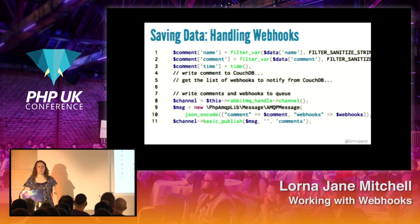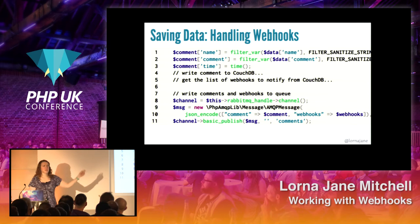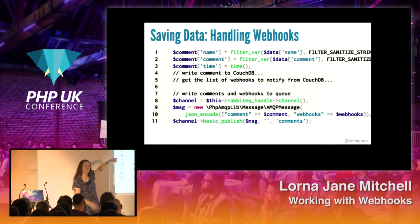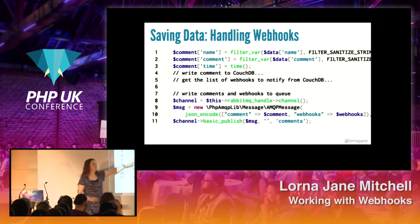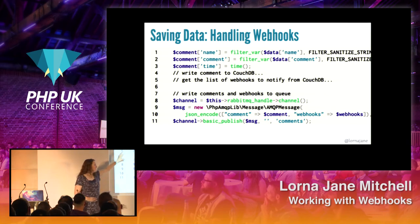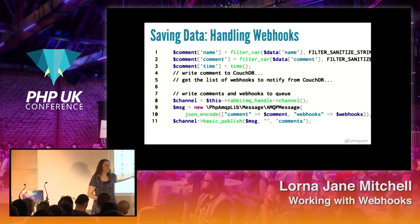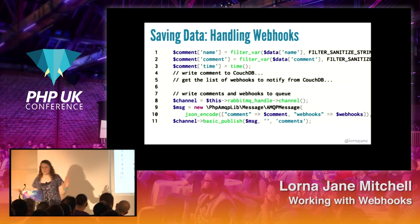Here is the PHP code to write to a queue — all of this is on GitHub. First we sanitize the incoming data from the form. We save the data to the database. We pick up a list of webhooks. We assemble the data. We connect to RabbitMQ. And then we just create a new message and publish it to the queue. This is all the code you need to write to RabbitMQ. If you're not already working with queues, go for it — it's really not that hard. I'm using RabbitMQ here, we have it on IBM Cloud, and I actually love RabbitMQ.